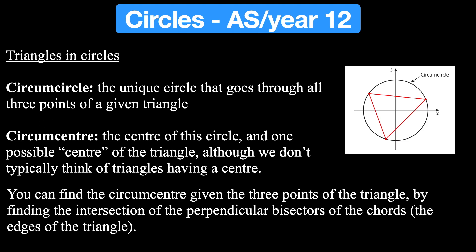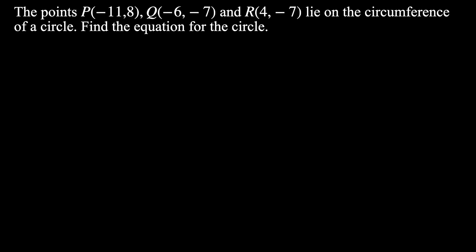In this video we're going to focus on how to find the circumcenter. You can find the circumcenter given three points of the triangle by finding the intersection of the perpendicular bisectors of the chords — in other words the edges of the triangle. So this edge would be a chord of the circumcircle. To find the circumcenter this involves finding two perpendicular bisectors of any two of these edges and finding where they intersect, and that will give you the center of the circle.